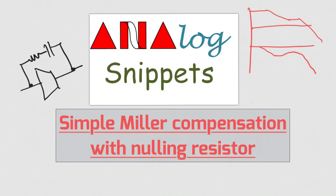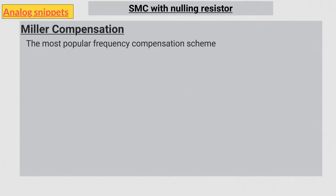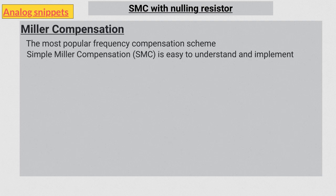Hello everyone, welcome back to analog snippets. Miller compensation is probably the most popular form of frequency compensation in analog design. Simple Miller compensation is pretty easy to understand and implement, and we have discussed this compensation scheme in many previous videos, but it has several disadvantages.